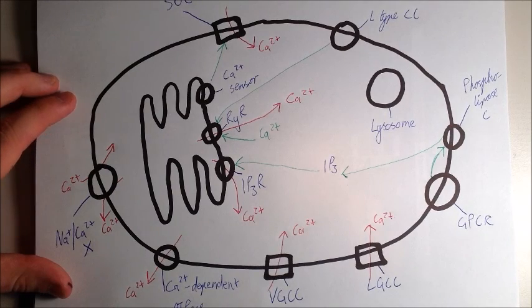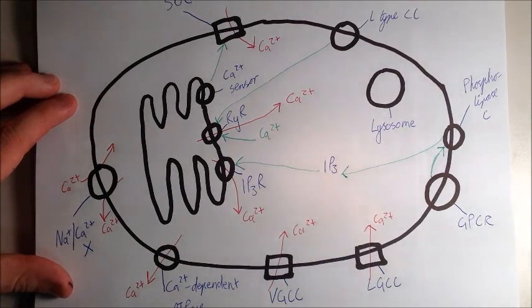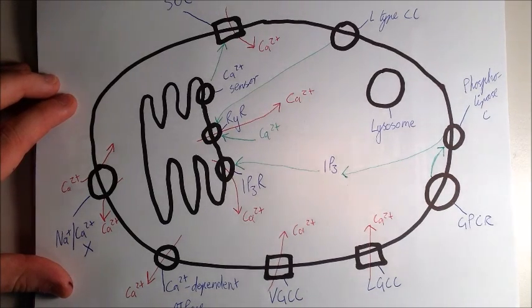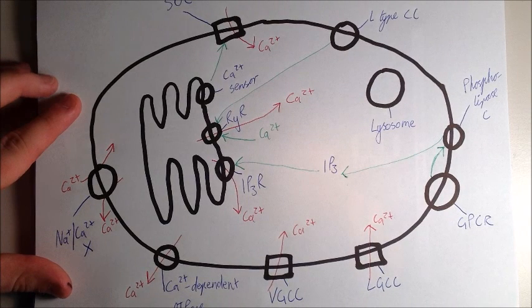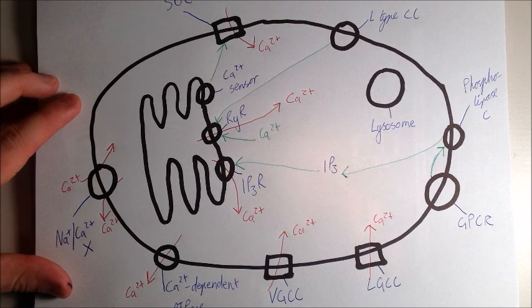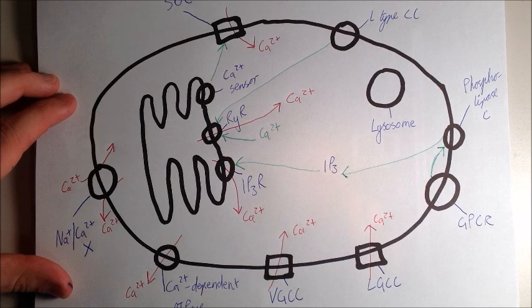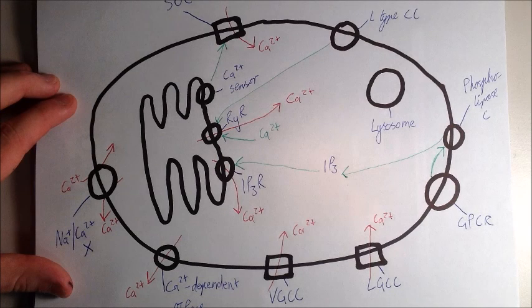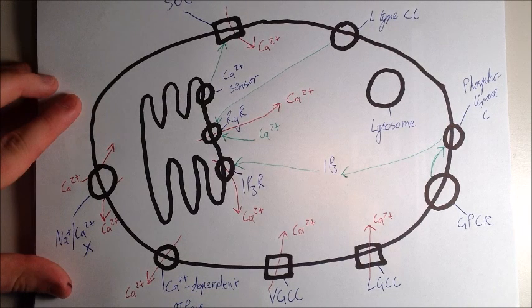Finally, we have the sodium-calcium exchange protein. Now, this exchange protein can work both ways. It can work for when calcium comes into the cell, or it can work for it going out. And, basically, all that happens is, when there's three sodium going in to the cell, one calcium ion will come out. Alternatively, if there's three sodium going out of the cell, one calcium ion will enter the cell. So, it can work either way, as long as there's an exchange ion.